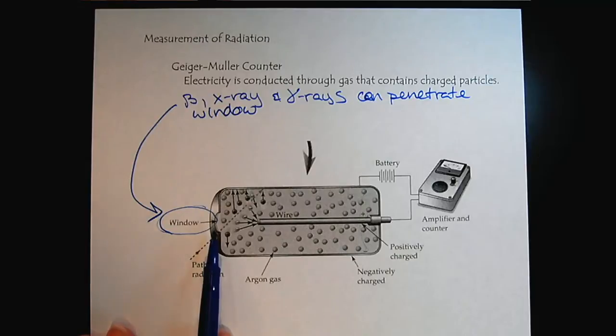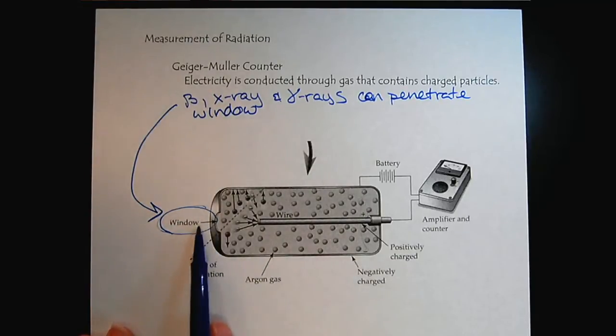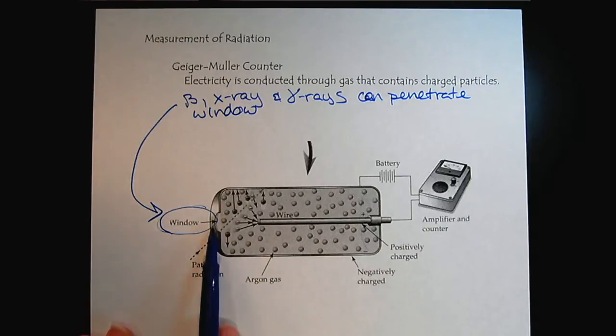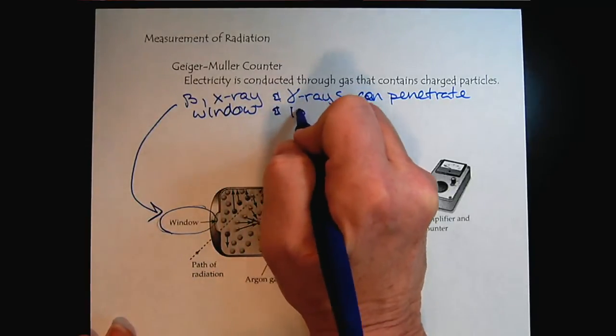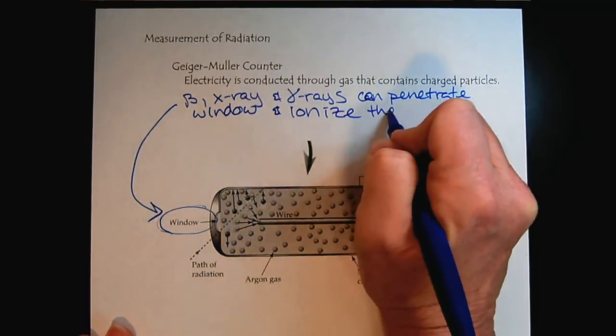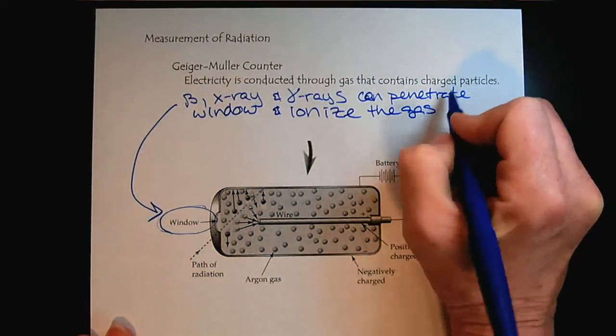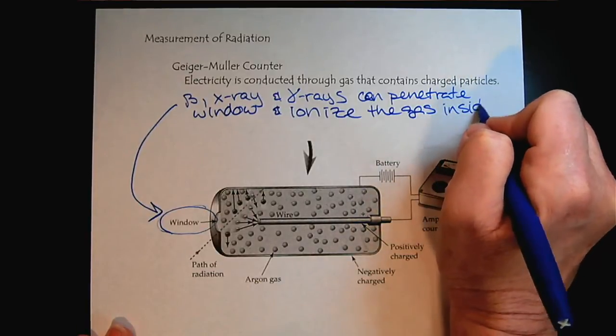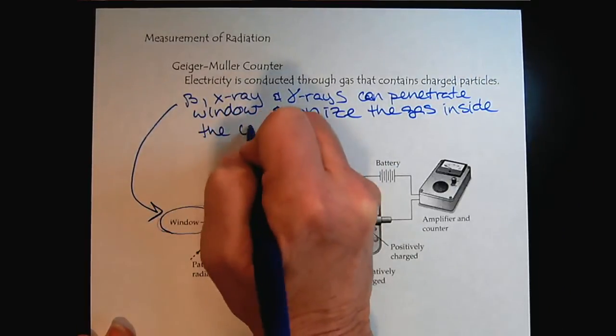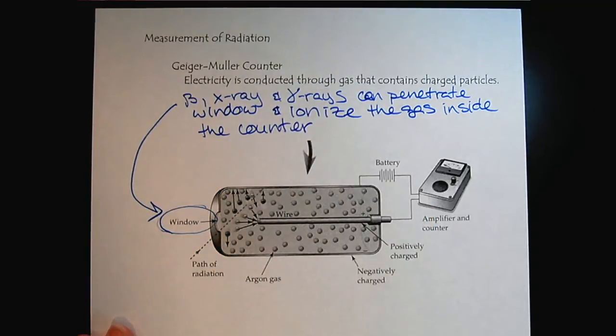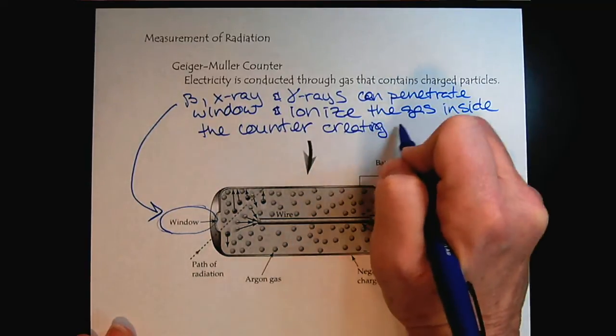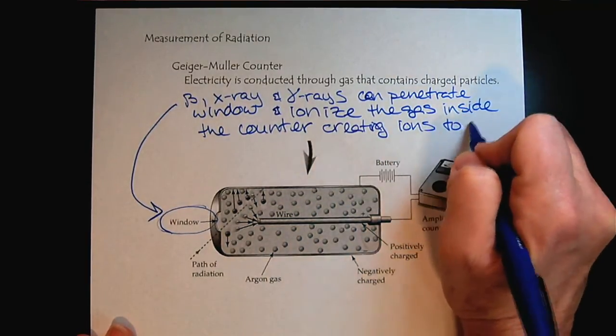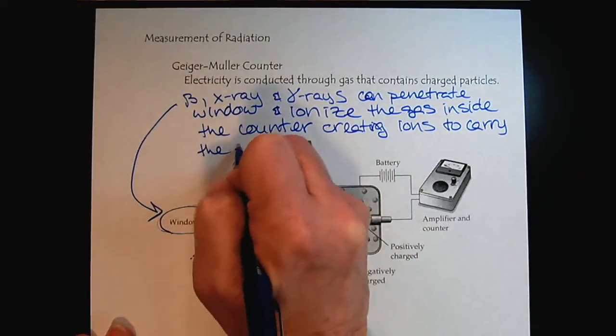Remember, so alphas can't penetrate the window. A Geiger counter is not a good way to measure alphas because the alpha particles will get stopped in the window. But the beta particles and the x-ray and the gamma rays will be able to penetrate through the window. They're called ionizing radiation and ionize the gas inside the meter or counter, creating an electrical current, or creating ions to carry the electrical current.